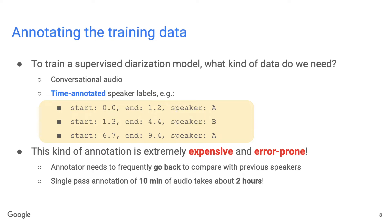This example has three turns in total: starting from speaker A, then speaker B, then back to speaker A again. However, if you ever tried to do this kind of annotation yourself, you will find that it is extremely time-consuming and error-prone. Every time you hear a new voice, you need to go back to listen to previous parts of the audio to check whether this voice previously appeared. Our studies show that annotating 10 minutes of audio typically takes more than 2 hours for a single pass, and doing multiple passes to guarantee quality is even more expensive.